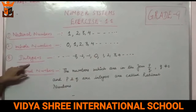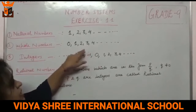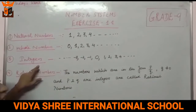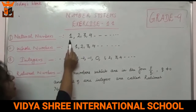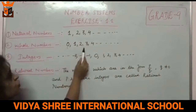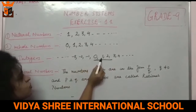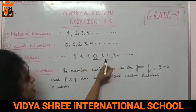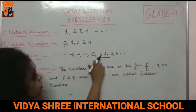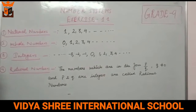Uske baad third point hai integers. Integers kya hoote hai? Jab hum natural numbers ke saath negative numbers bhi laga lete hai, toh ban jaate hai integers. Pehle natural numbers the: 1, 2, 3, 4. Agar hamne zero saath mein laga diya, toh ban gayi whole numbers. Ab whole numbers ke saath negative numbers attach kar rahe hai, toh ye ban gaya hai integers. Theek hai?